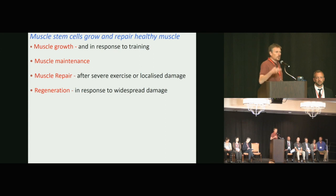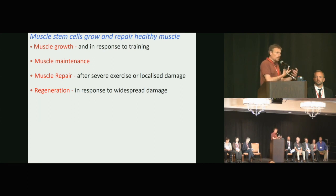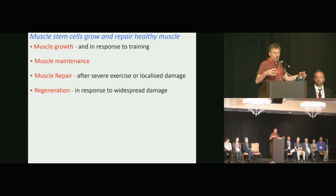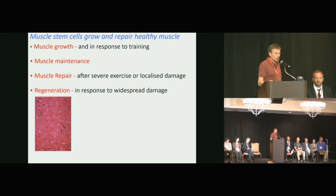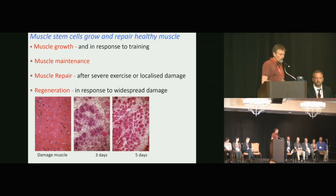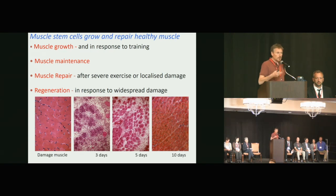You have a population of stem cells in your muscles to maintain and repair them. As you grow from birth, satellite cells contribute new nuclei to muscle fibers so they can grow. These stem cells make the muscle grow, look after it, and repair it. When muscle gets damaged, satellite cells activate and repair it so you end up with repaired muscle — this is the response to any insult to a muscle.